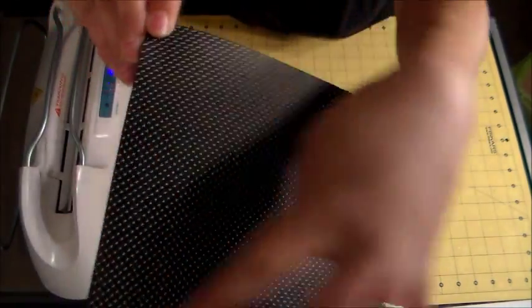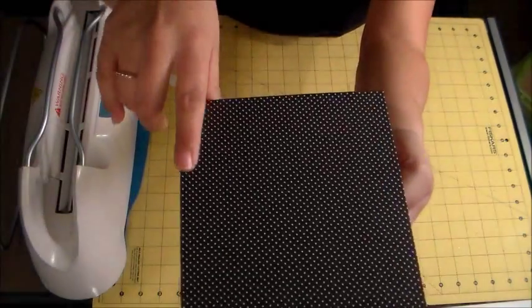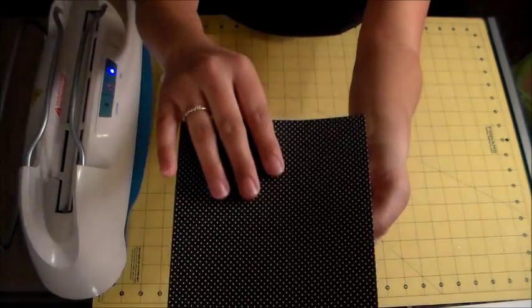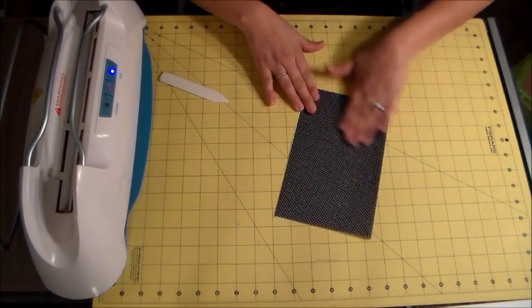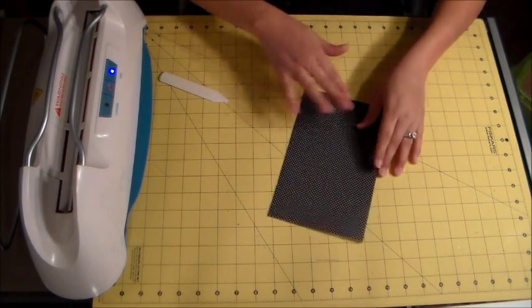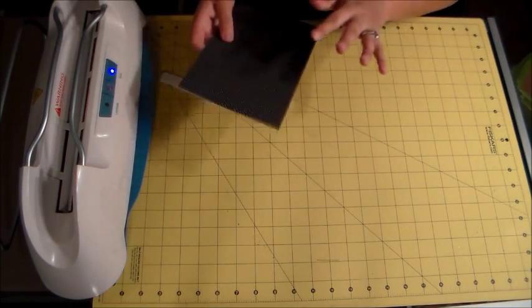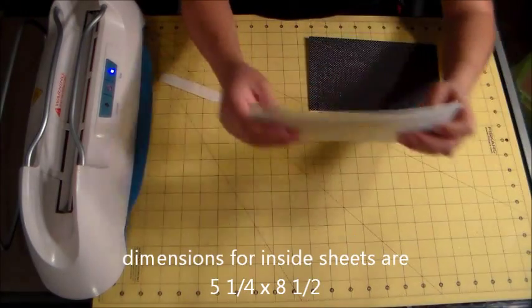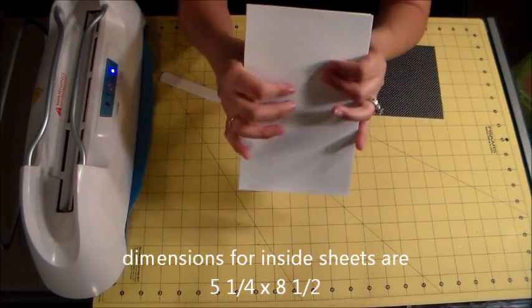So then we're just going to kind of straighten that out. So there we have our spine of our book. And the extra score lines is for when you open the book. It actually folds really nicely when you open it to fold it over, so your pages will just fold really nicely.